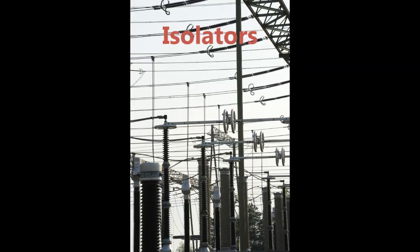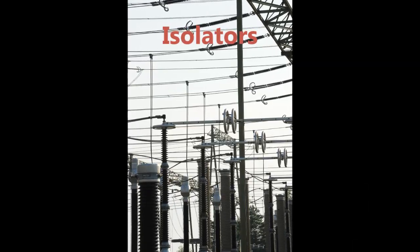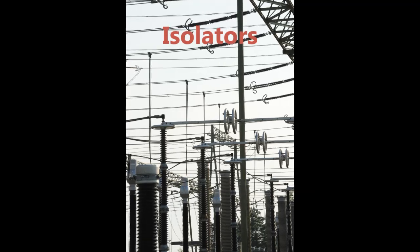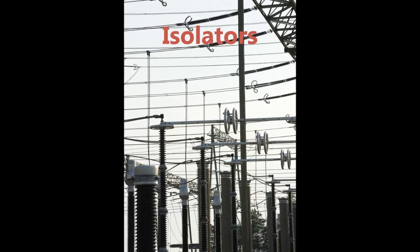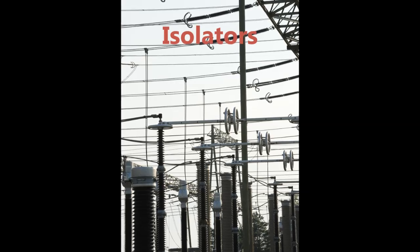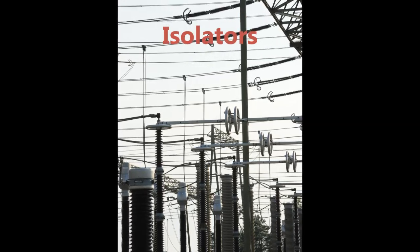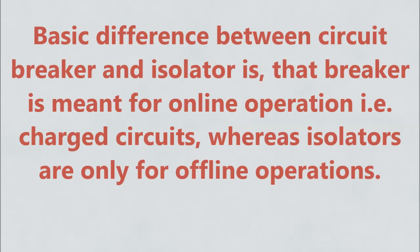Fifth, isolators. These are generally located next to the circuit breaker. The function of an isolator is to isolate the required part of the system — that is, to separate the faulty part from the healthy one — and also to carry out maintenance work. The basic difference between a circuit breaker and an isolator is that a breaker is meant for online operation on charged circuits, whereas isolators are only for offline operations.